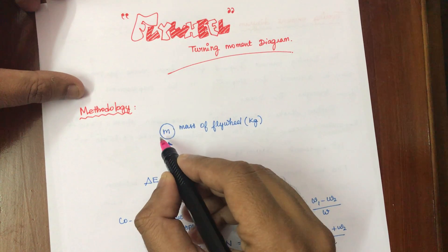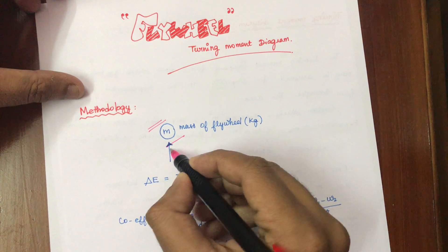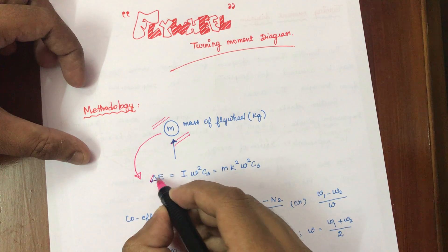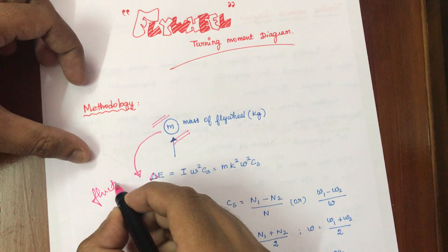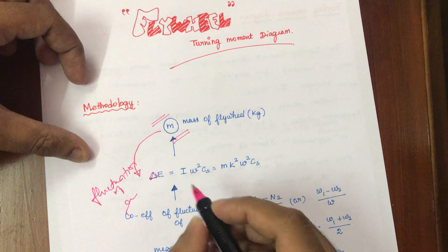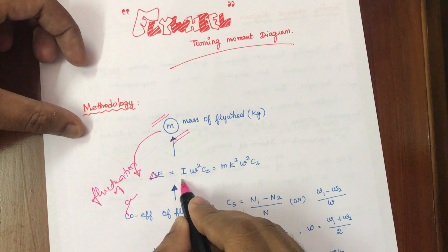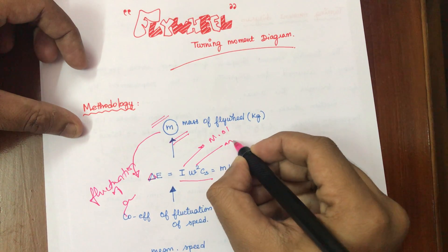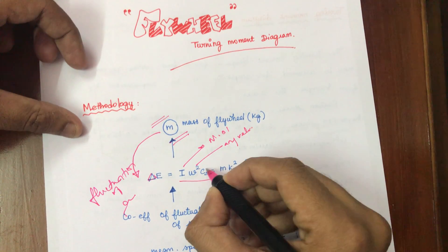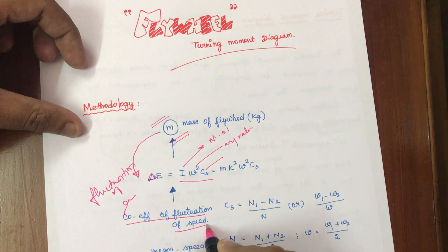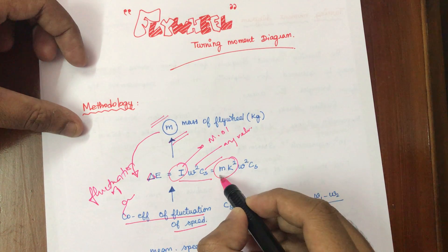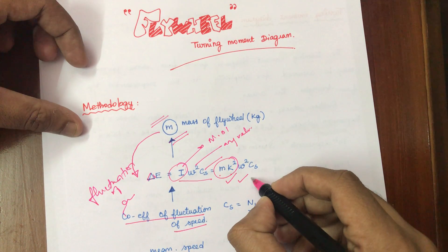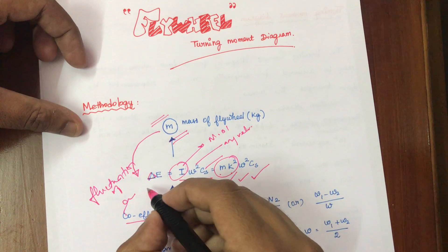What do we do here? On the flywheel, mass — how do you define mass? There is a formula for fluctuation of energy, del E. That is fluctuation of energy. In the formula: del E = I·ω²·Cs. I is nothing but moment of inertia, omega is angular velocity, Cs is coefficient of fluctuation of speed, and I is nothing but mk² — mass into radius of gyration squared.